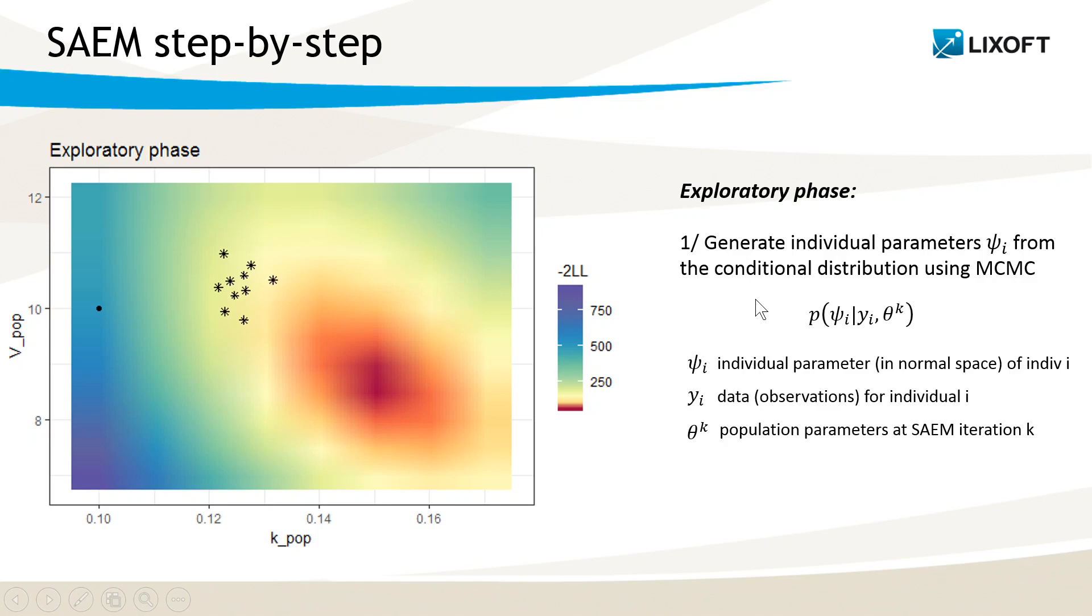SAEM starts with the exploratory phase. The first step is to generate individual parameters psi from their conditional distribution. The conditional distribution is the probability distribution of psi given the data y and the population parameters at the previous iteration, theta k. This distribution has no analytical expression. To sample values from this distribution, we use a Markov chain Monte Carlo procedure and we generate one value per individual.